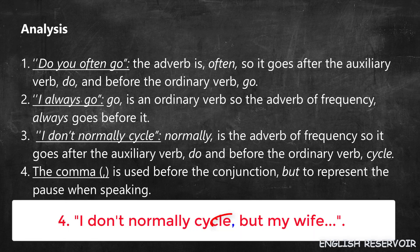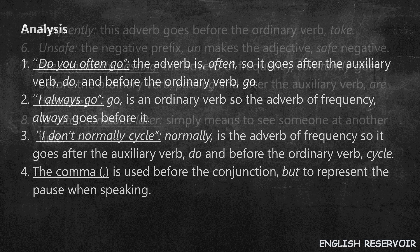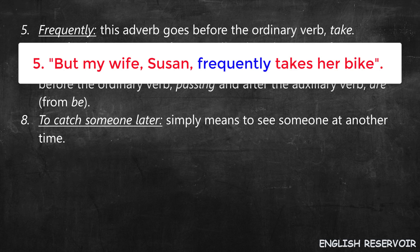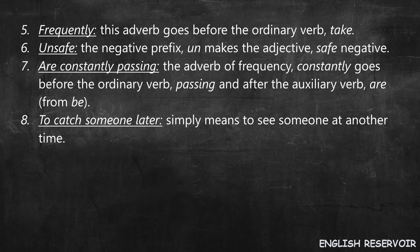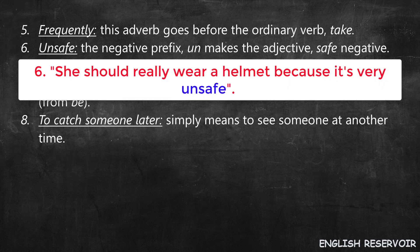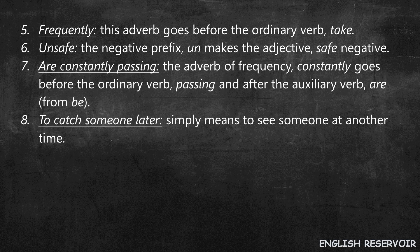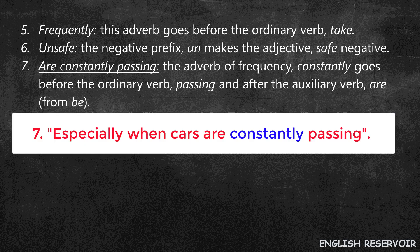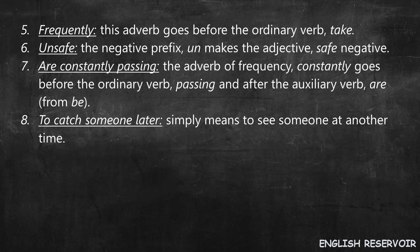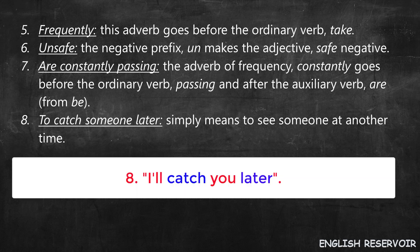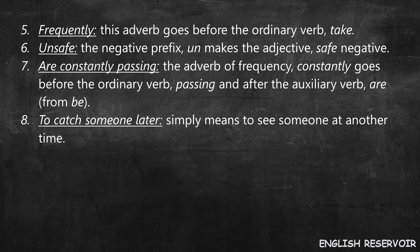Four: A comma is used before the conjunction 'but' to represent the pause when speaking. Five: 'Frequently' — this adverb goes before the ordinary verb 'takes'. Six: The negative prefix 'un' makes the adjective 'safe' negative. Seven: 'Are constantly passing' — the adverb of frequency 'constantly' goes before the ordinary verb 'passing' and after the auxiliary verb 'are' from 'be'. Eight: 'To catch someone later' simply means to see someone at another time.